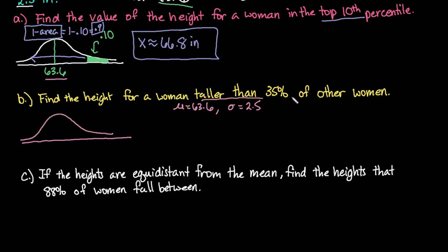So taller than 35% means that this woman is taller. So her height is going to be here. And then she's taller than 35% of the other people. So this would be .35. And we're looking for what is this x value here. Remember that we are centered at 63.6.